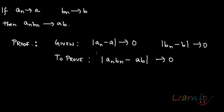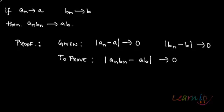Next, let us prove this property for the product of two sequences. We have two convergent sequences a_n and b_n, where a_n converges towards a and b_n converges towards b. Then the product of these two sequences will also converge towards the product of the limits, that is a·b.